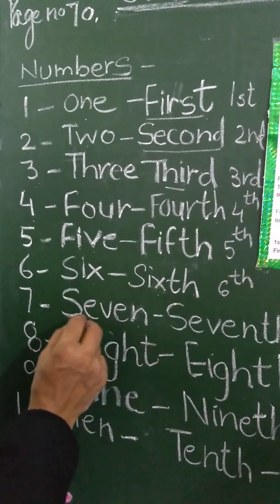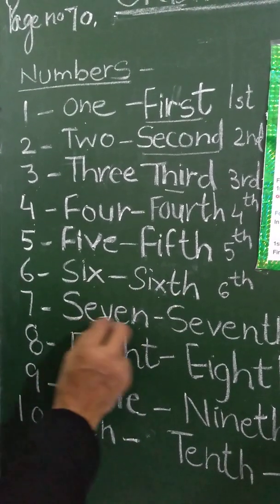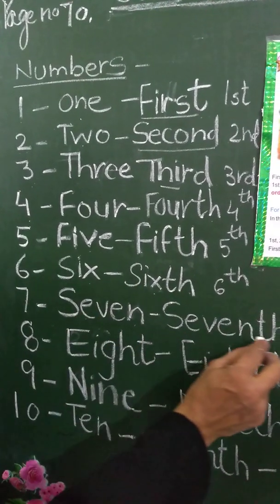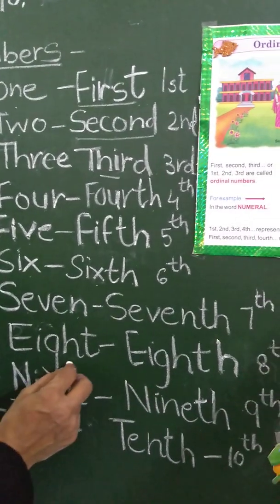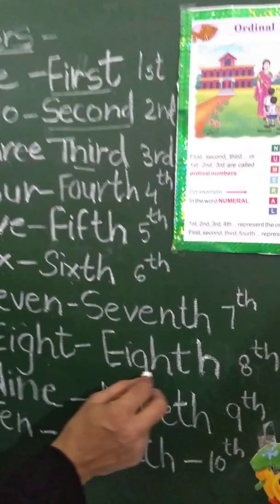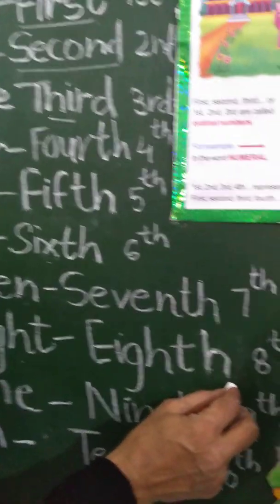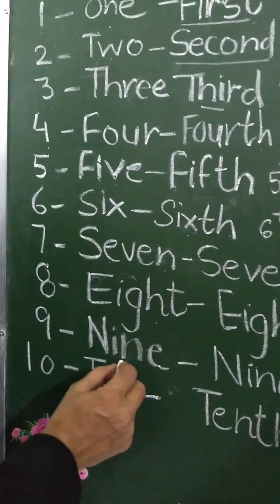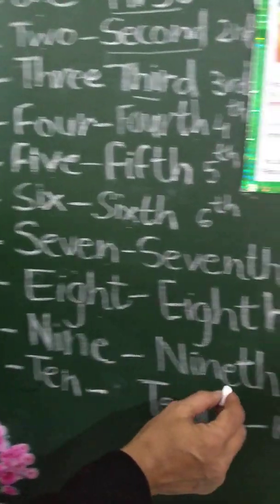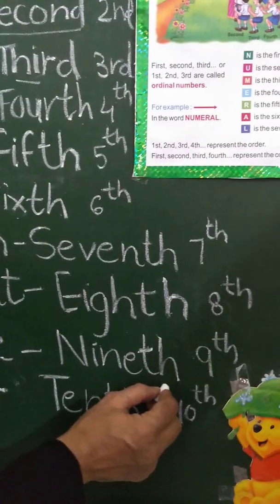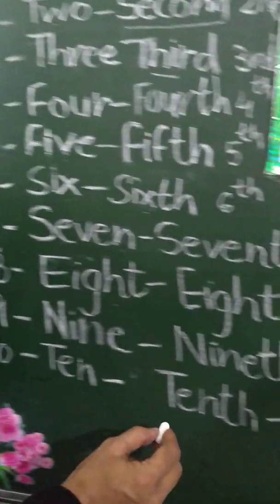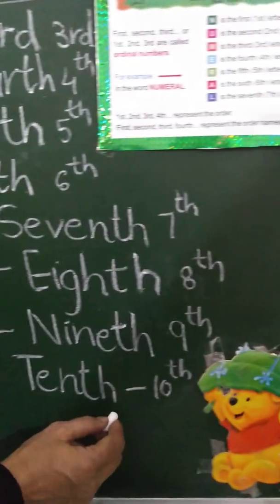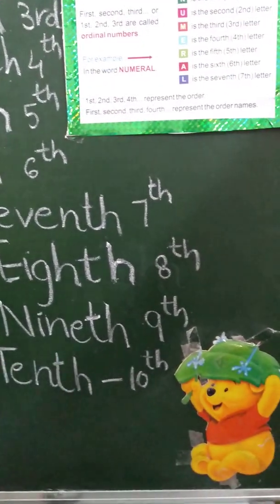In seven, ordinal number is seventh. In eight, ordinal number is eighth. Nine — ninth. Ten, ordinal number is tenth.